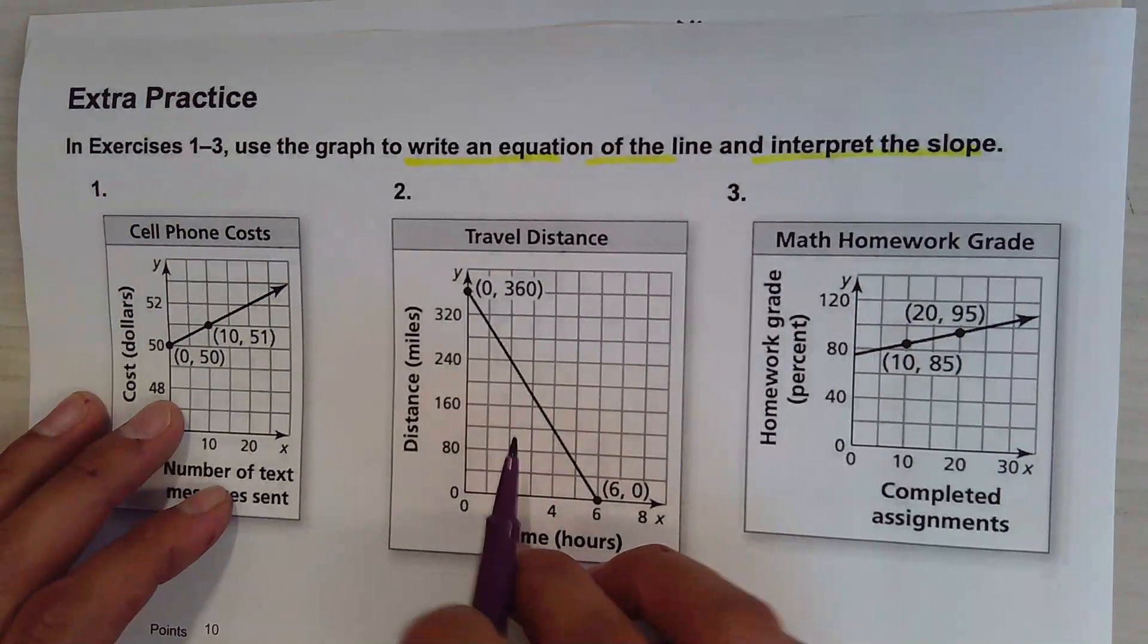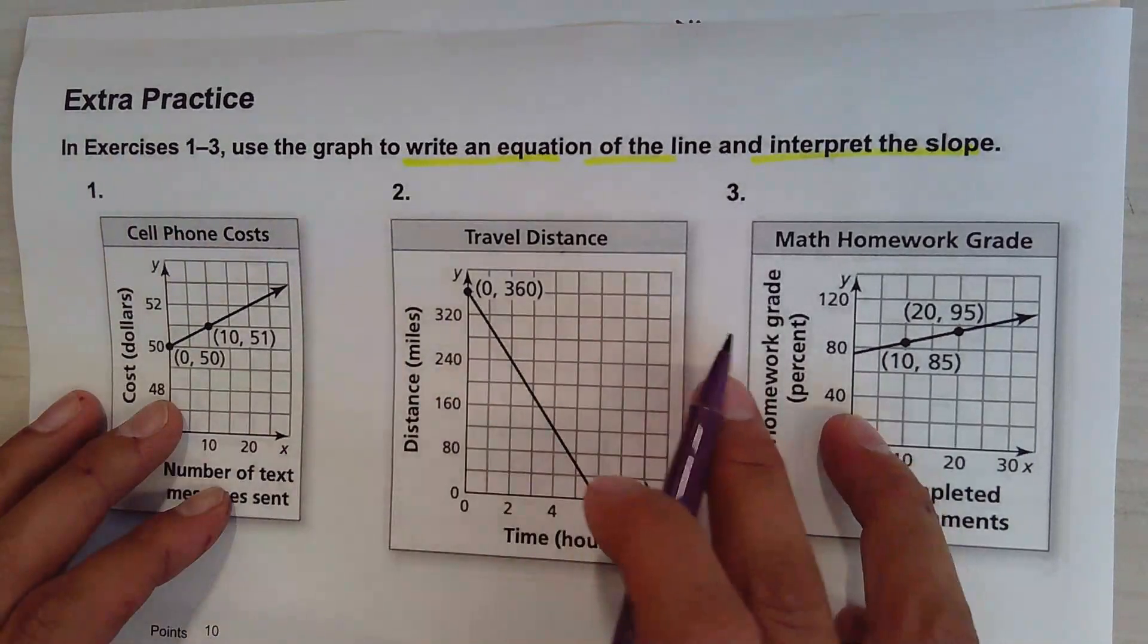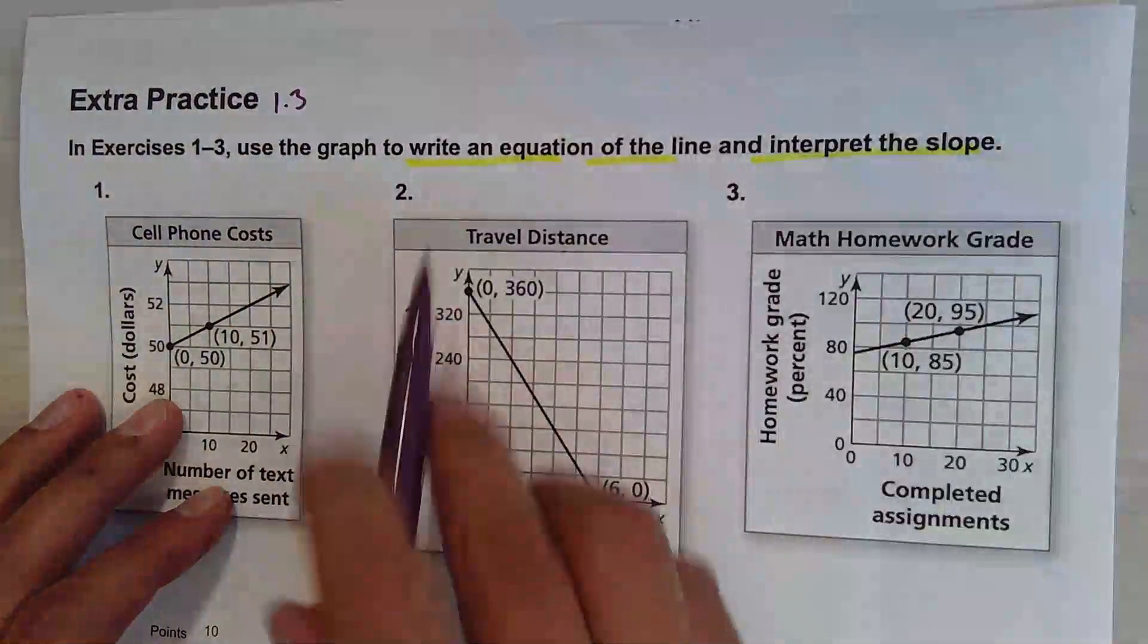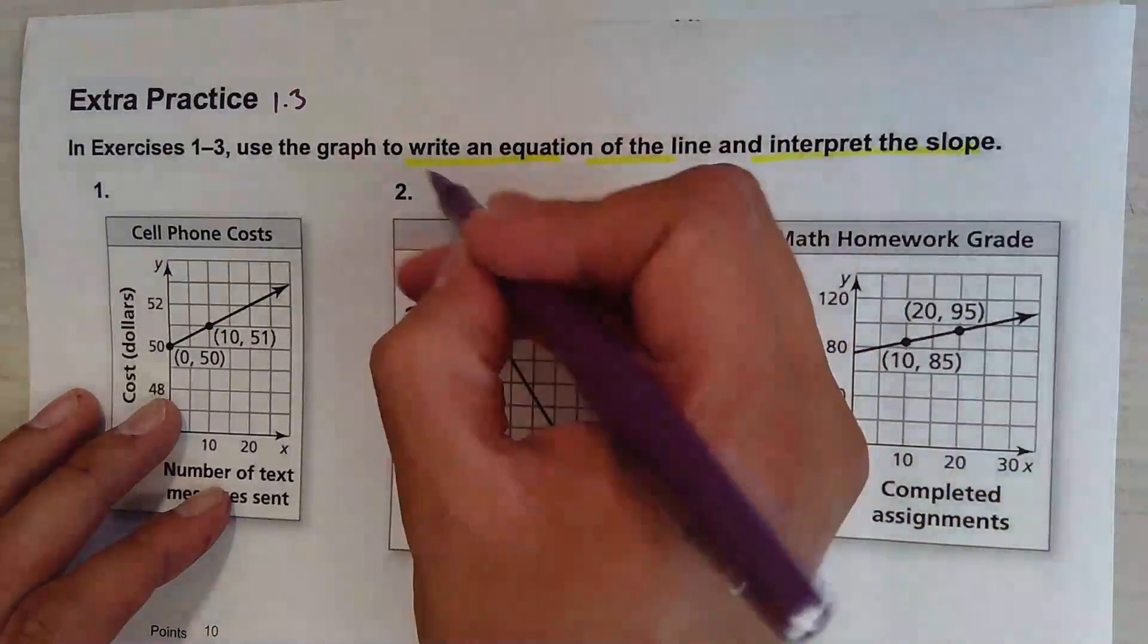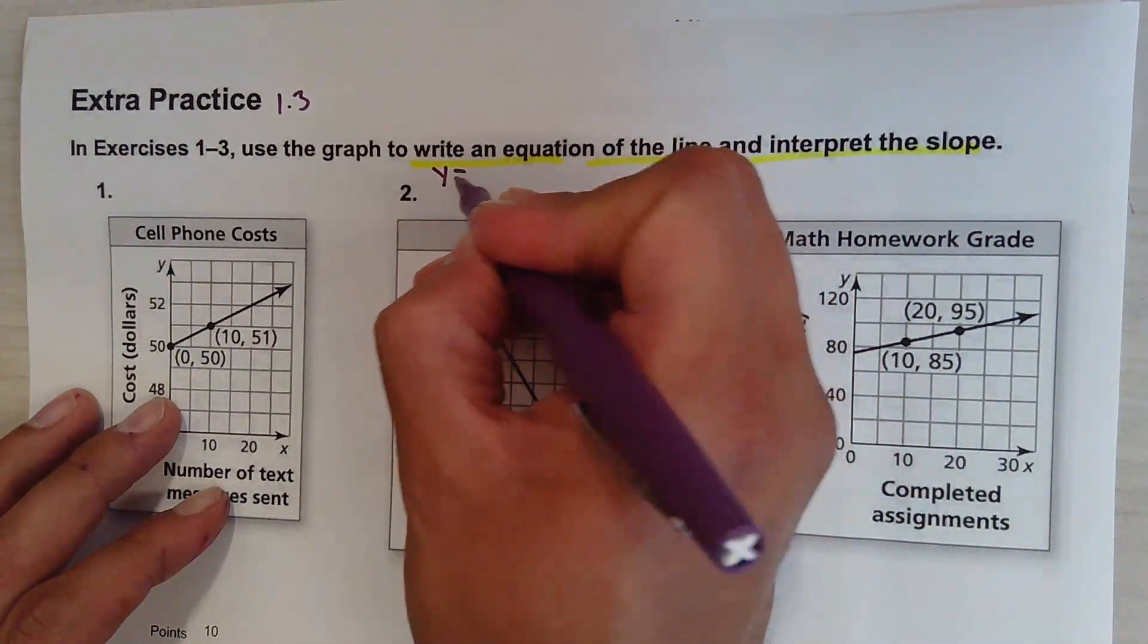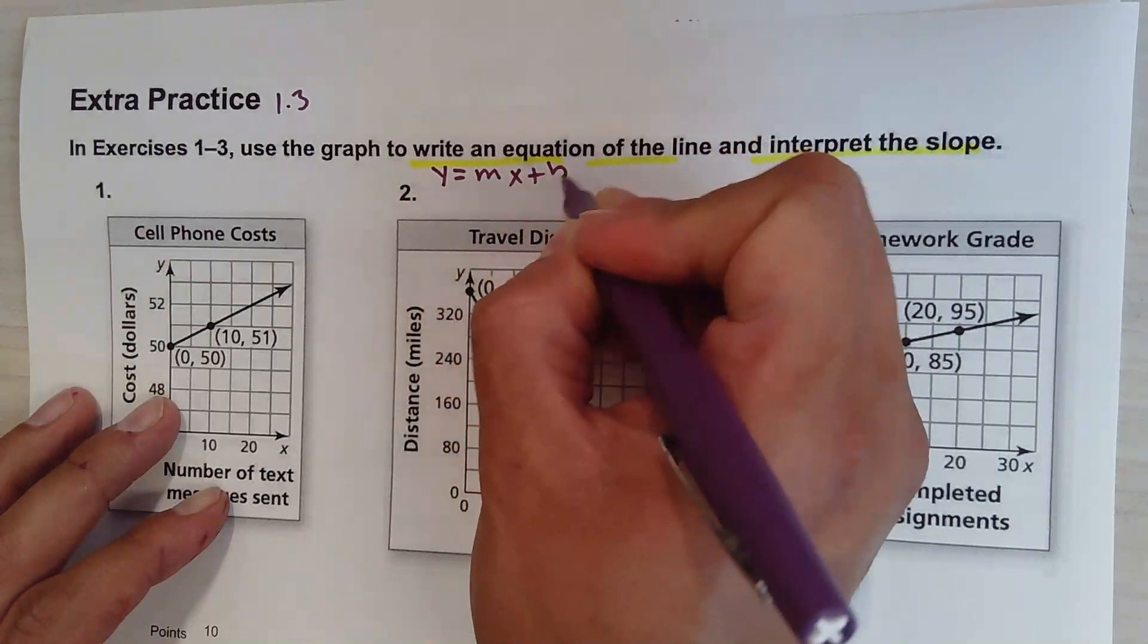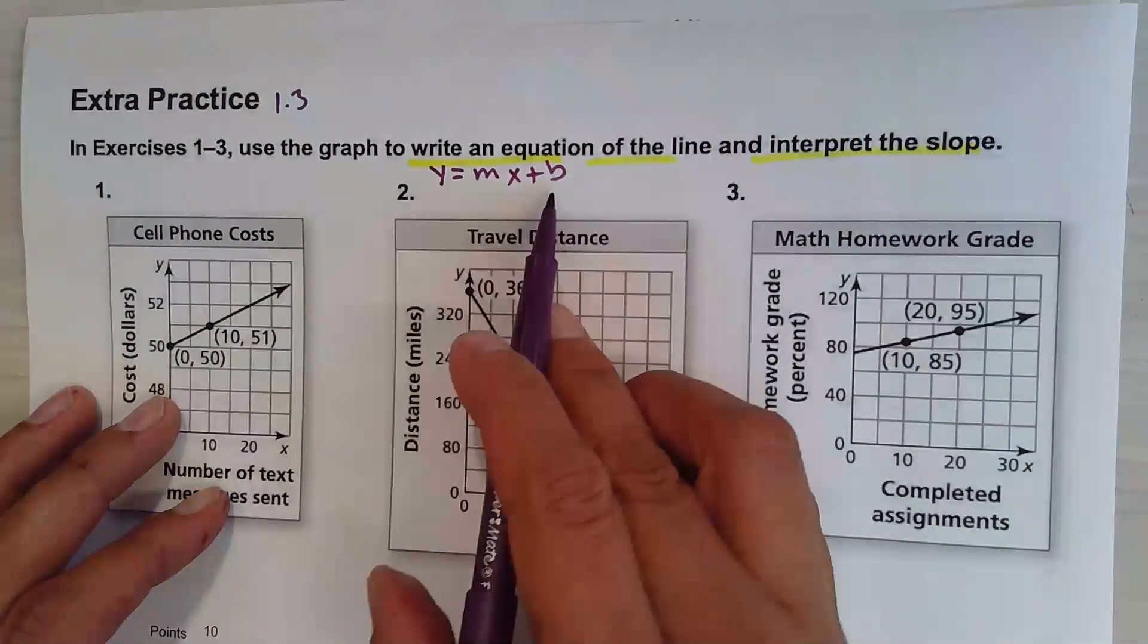Alright, in this video we're going to go over the solution for the three questions you guys were assigned for section 1.3. So they want you to write an equation. As a default, we're going to write it in slope-intercept form, where M is the rate of change and B is the y-intercept.